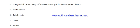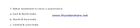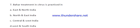Question number six: Satakurthi is a variety of sugar orange introduced from which country? The options are: Indonesia, Malaysia, USA, or India. The right answer is option D — India.